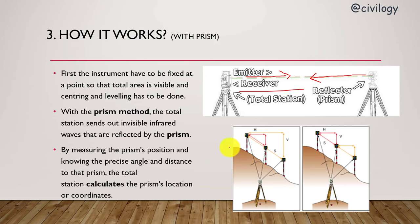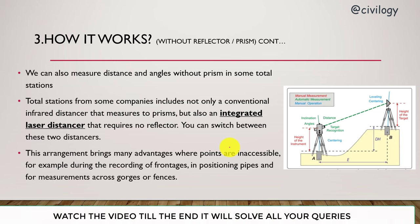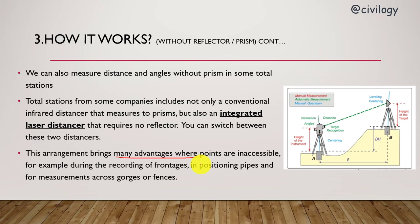Without prism we can also calculate. Some manufacturers provide integrated laser. This arrangement brings many advantages where points are inaccessible, for example during the recording of frontages, positioning of pipings, measurement of gorges or fences. These are inaccessible points where you can still use total station.